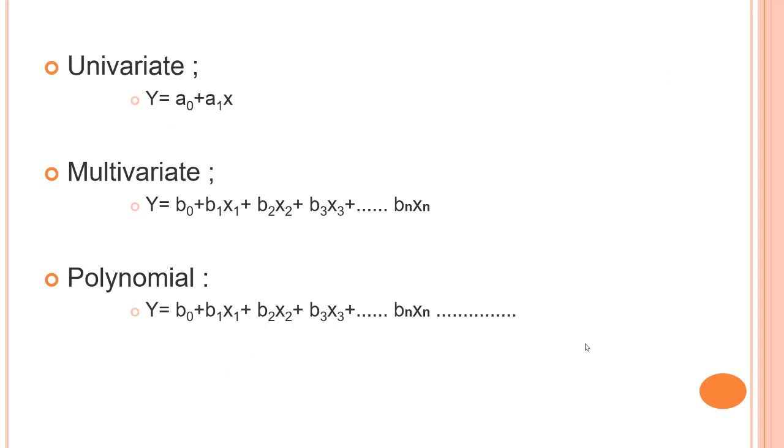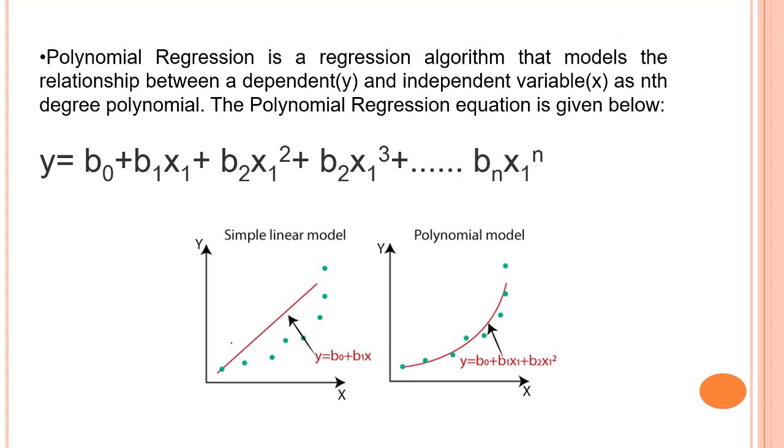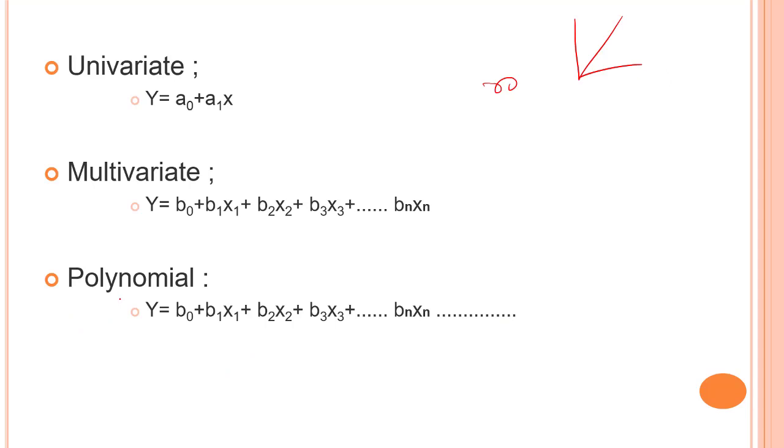There is a specific need on when we have to implement the polynomial regression. If we apply a linear model on a linear data set, then it provides us a good result. Wherever we have the linear data set where the data follows a linear trend, we can have a good fit using the linear regression model. But if we apply the same model without any modification on a non-linear data set, then it will produce a drastic output due to which loss function will increase, the error rate will be high, and accuracy will be decreased.